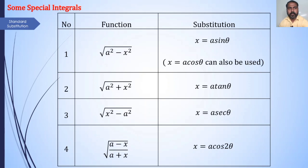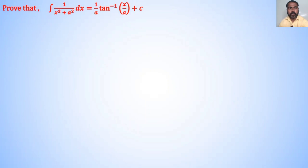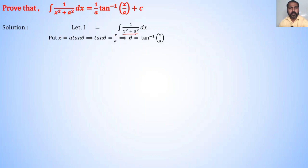Now we prove some special integral results. First result — prove that ∫1/(x²+a²)dx = (1/a)tan⁻¹(x/a) + c. Solution: denote the given integration by I, so let I = ∫1/(x²+a²)dx. In the denominator we clearly see the term x²+a², therefore put x = a tanθ. This implies tanθ = x/a, which implies θ = tan⁻¹(x/a).